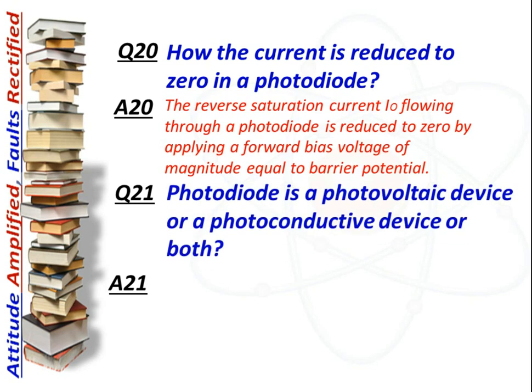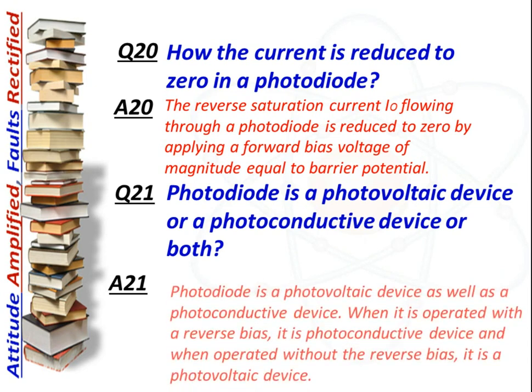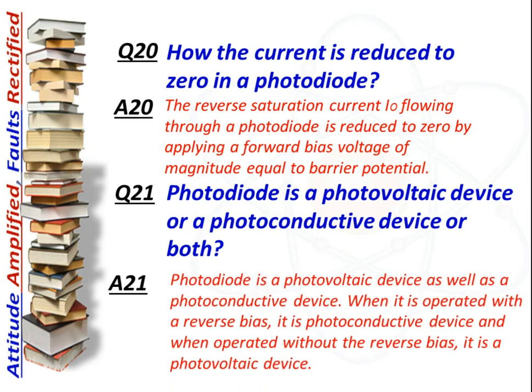Question: Is a photodiode a photovoltaic device or a photoconductor device, or both? Answer: A photodiode is both a photovoltaic device and a photoconductor device. When operated with reverse bias it is a photoconductor device, and when operated without reverse bias it is a photovoltaic device.